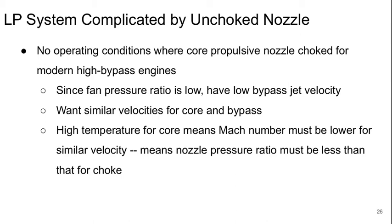Because we've got a high temperature in the core, it means the Mach number has to be lower for a similar velocity, and that means that the nozzle pressure ratio must be less than that for choked, since choked or Mach 1 is the highest possible Mach number we will have for the bypass nozzle exit condition.